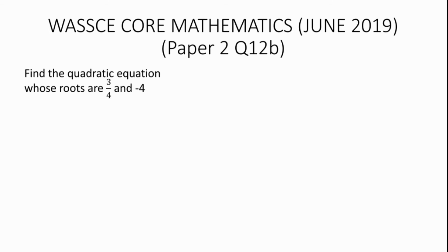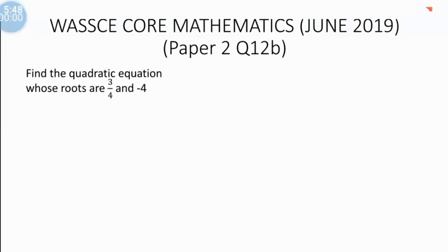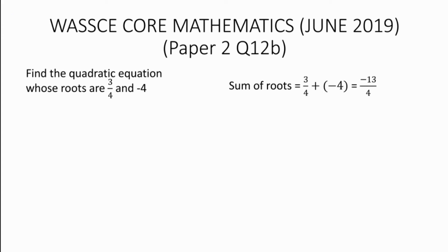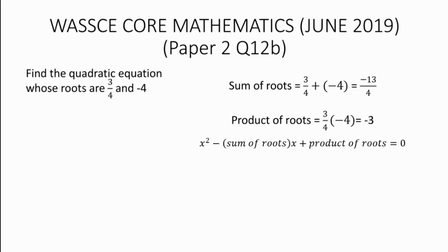We now find the quadratic equation whose roots are 3/4 and minus 4. The formula for finding the quadratic equation when roots are given is x squared minus (sum of roots) times x plus (product of roots) equals zero. We need to find the sum of roots and the product of roots. The sum of roots equals 3/4 plus minus 4, which gives minus 13/4.